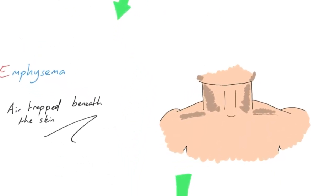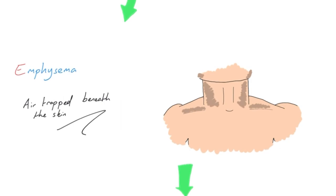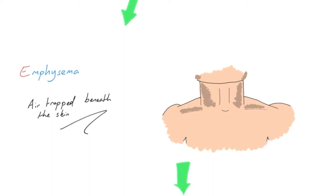After wounds, there's another chance to look for emphysema. When feeling the chest earlier we were feeling for air trapped under the tissue; now looking at the neck we do the same. It can extend into the lower parts of the face, around the mandibular area, up into the cheeks, and around the clavicles. This is a clear clue that there's a traumatic insult to the surface lining of the lung with air escaping into surrounding tissues.